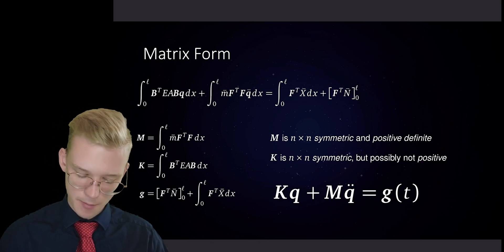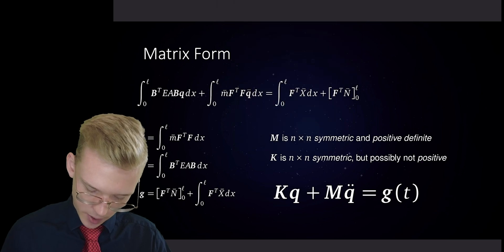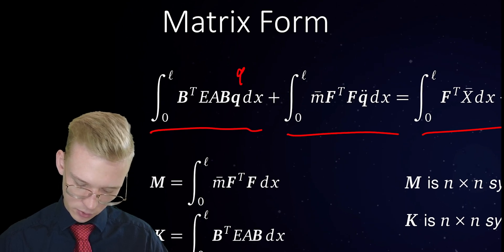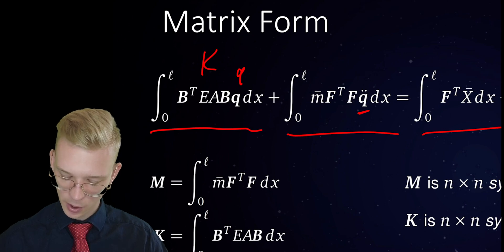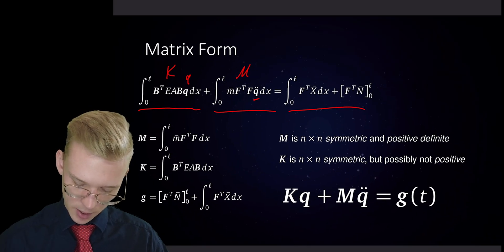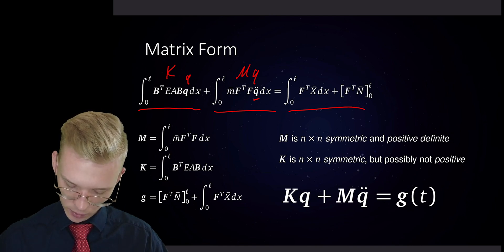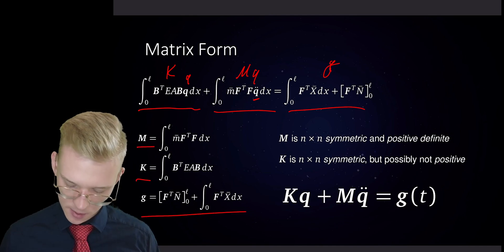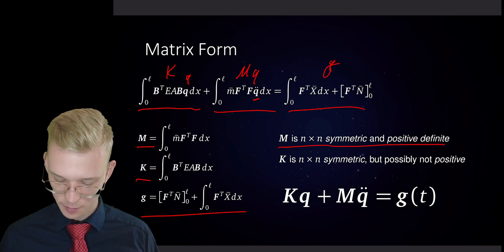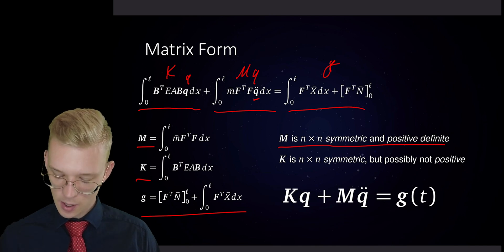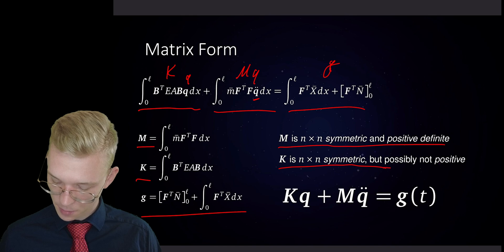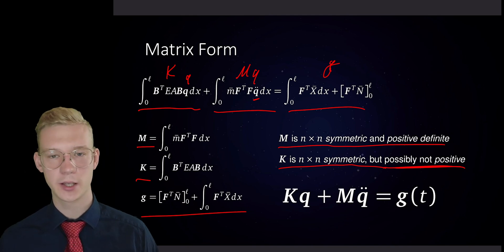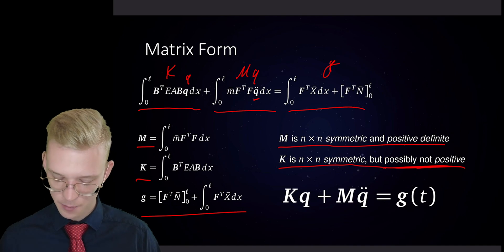This equation can be put into matrix form: we have one part, another part, and another part. We already see that if this is a matrix with some Q's, this is probably the stiffness matrix, and with some Q double-dots this will be our mass matrix. So we have KQ plus MQ-double-dot equal to an additional force G. The mass matrix M is symmetric and positive definite, meaning all eigenvalues are positive. K is symmetric but possibly not positive definite — for unstable systems with negative stiffness we do not have a positive definite matrix.